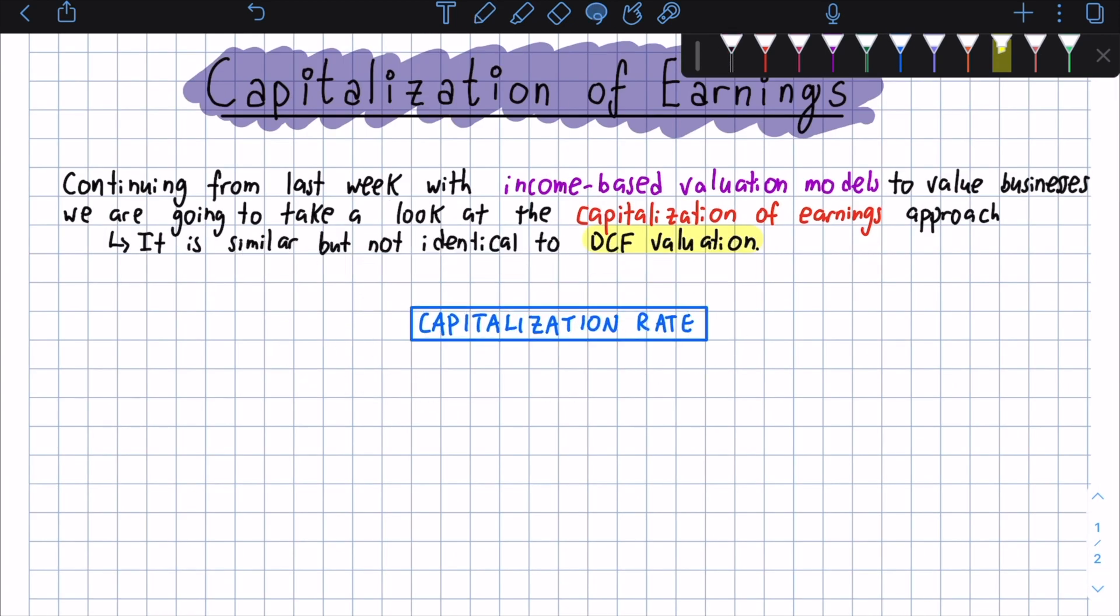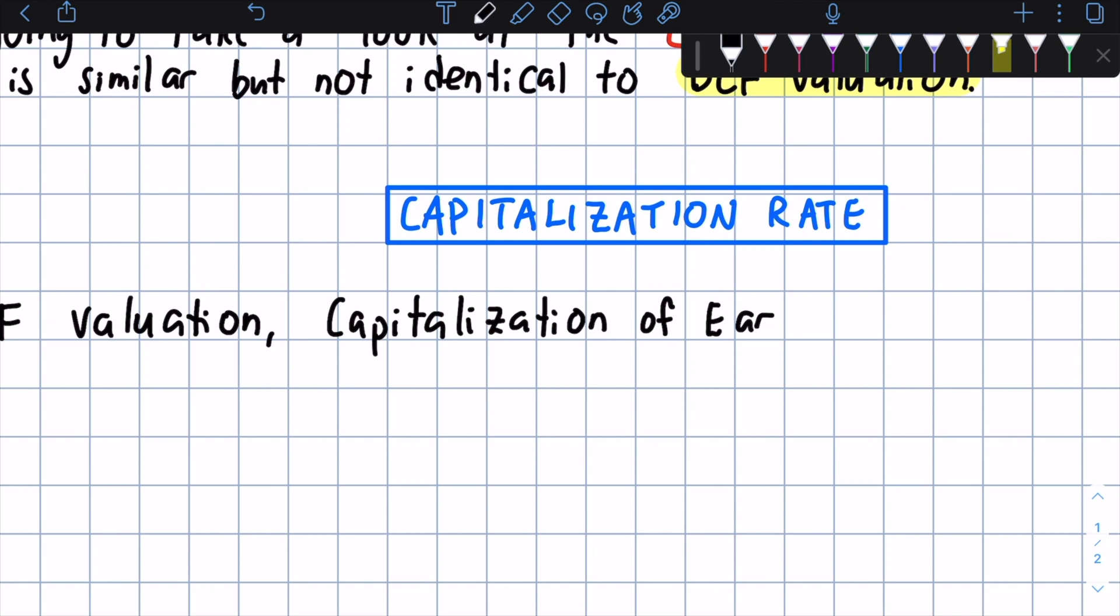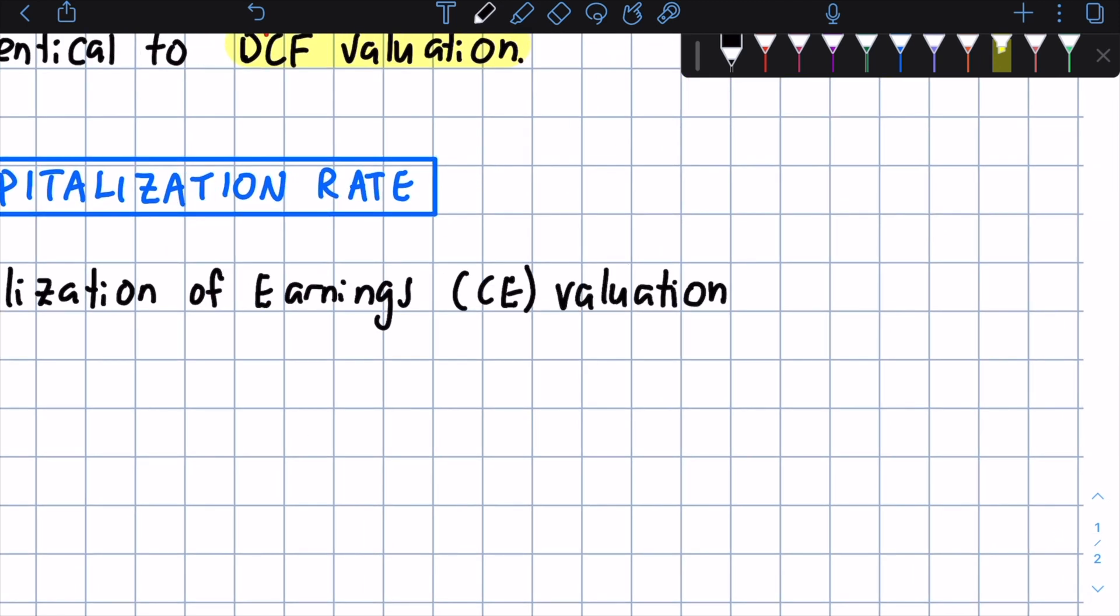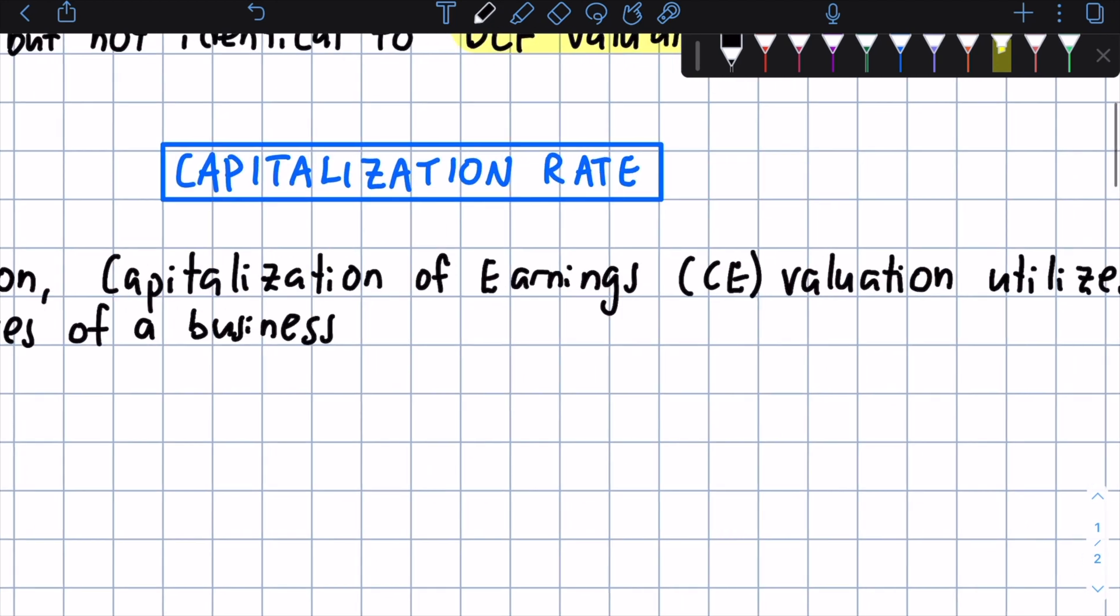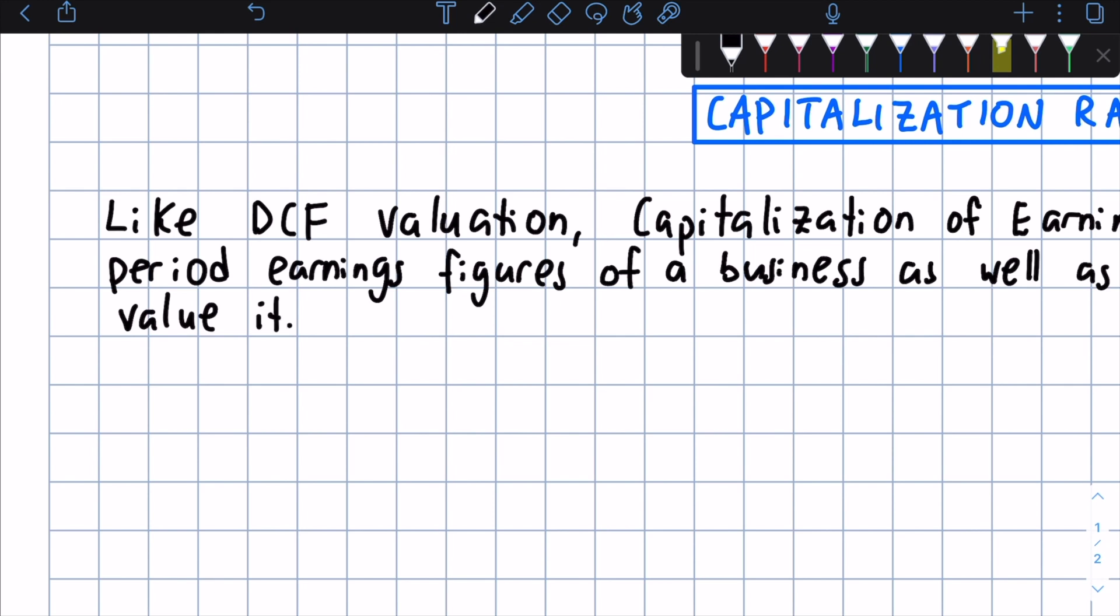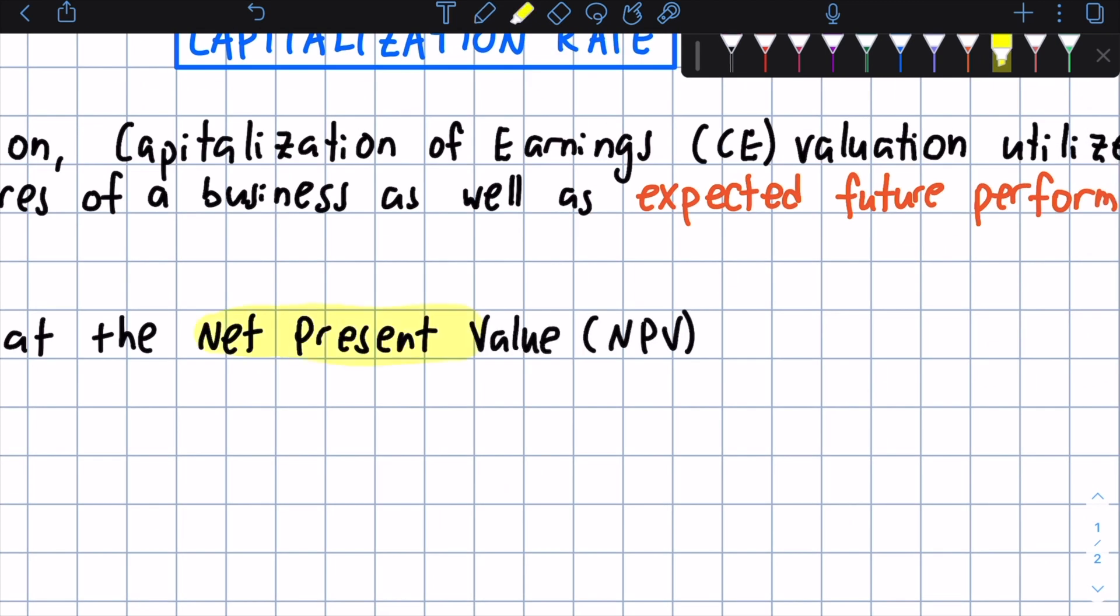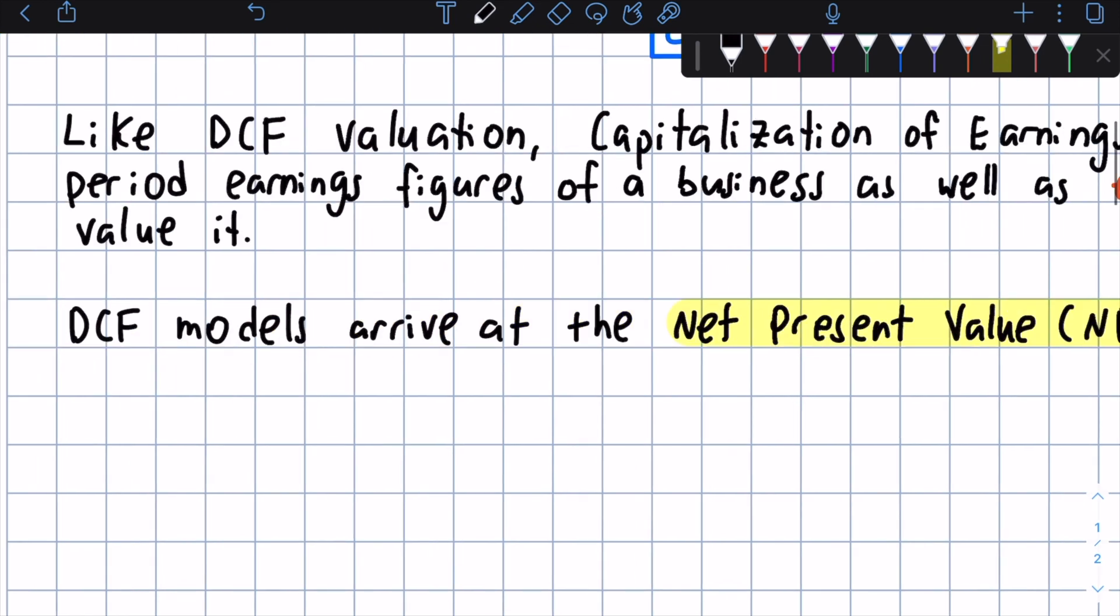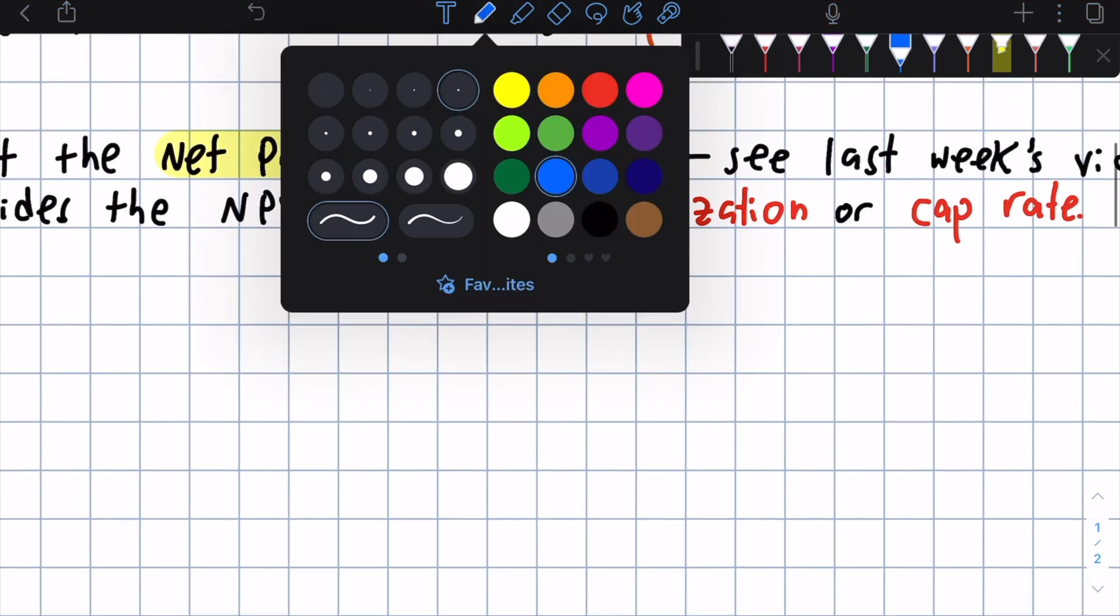So let's take a look at what's called the capitalization rate first of all. Like DCF valuation, capitalization of earnings, or CE I'm using here for short, utilizes current period earnings figures for that current period or year of a business, as well as expected future performance in order to give it a proper value. DCF models arrive at the net present value, or NPV, as we've talked about last week. And CE, or capitalization of earnings, divides the net present value by the capitalization, or cap rate. So this is a rate used to divide the NPV.